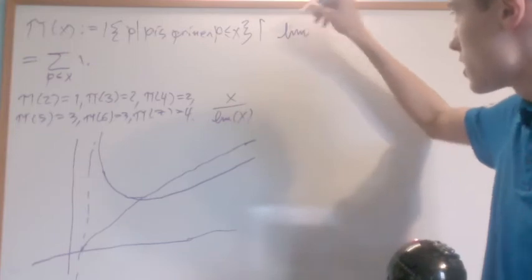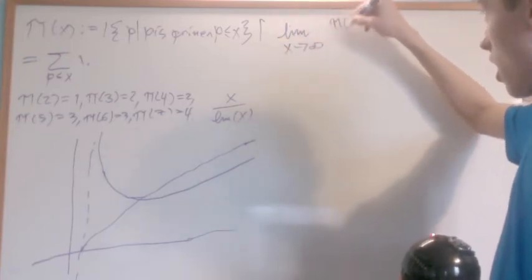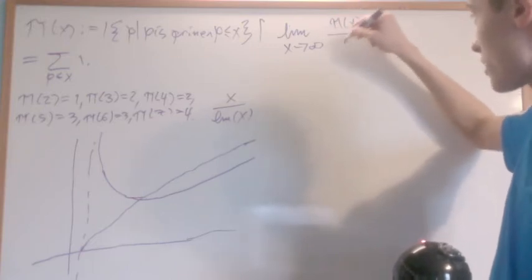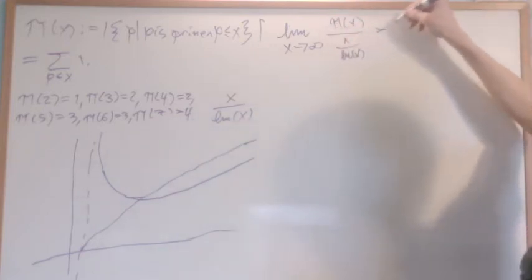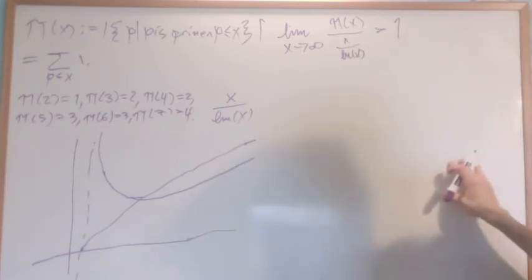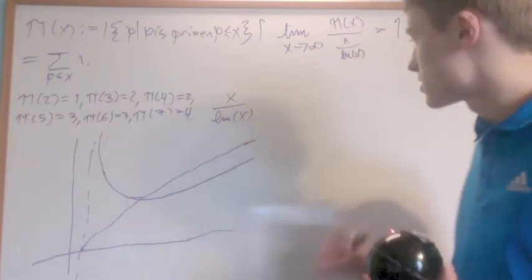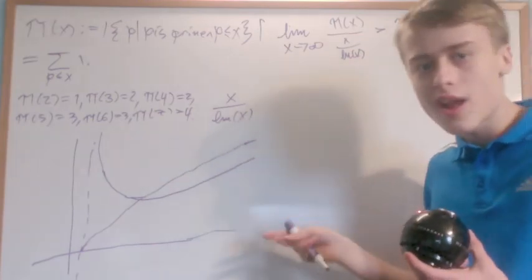It says that the limit as x goes to infinity of π(x) over x natural log of x is equal to 1. Meaning that asymptotically, as you go way out here, they grow at a very similar rate. That's what this is saying. It's not saying that they get close to each other because they don't really get that close to each other.